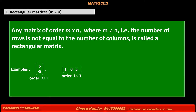Now see the second example, which contains elements 1, 0, 5. This matrix has 1 row and 3 columns, meaning again the number of rows is not equal to the number of columns, so this is also a rectangular matrix.